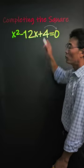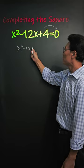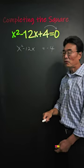First, bring the 4 over to the right side, giving us x squared minus 12x equals negative 4.